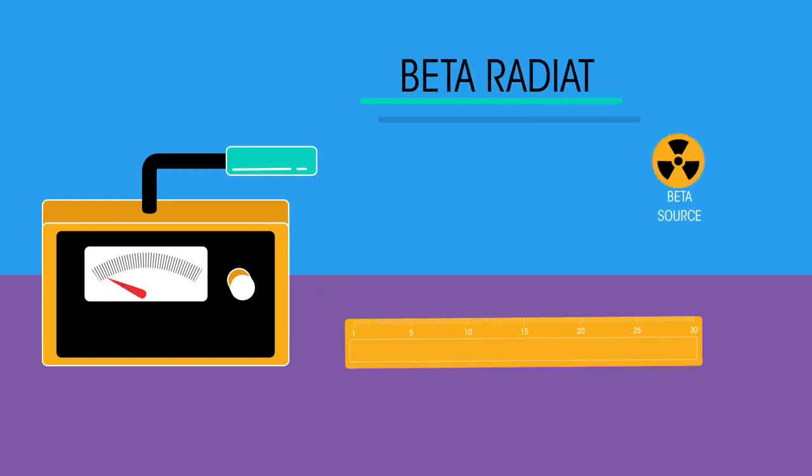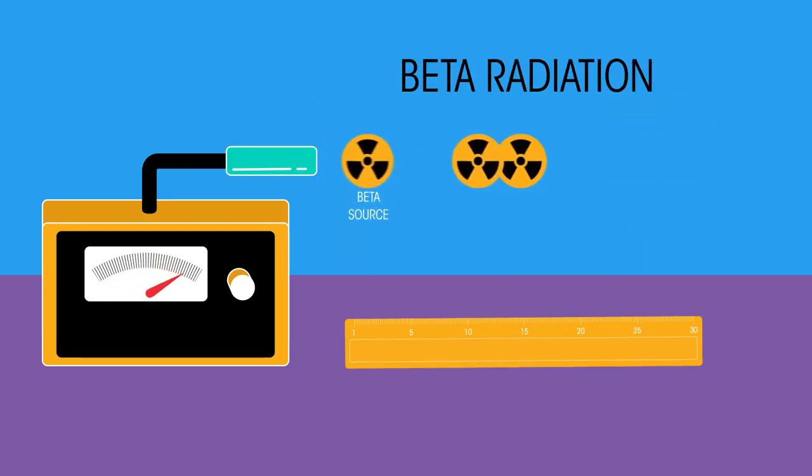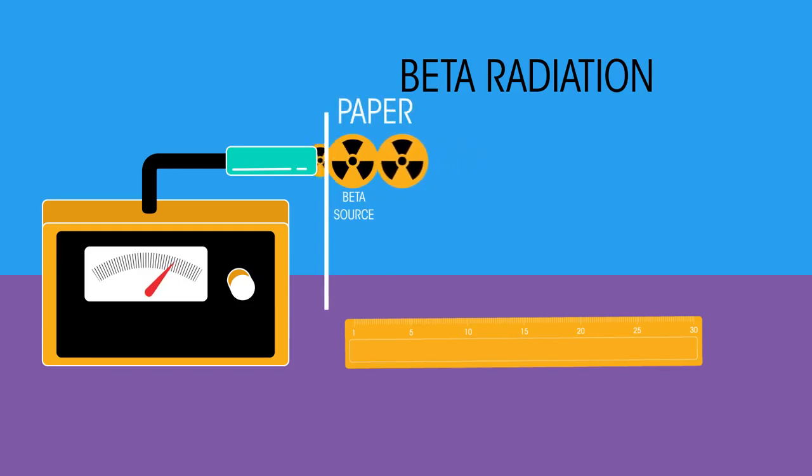Now for beta radiation. The addition of paper stops some of the beta particles being detected. We can see that beta particles have good penetration in air and thin paper but can be stopped by thin metal.